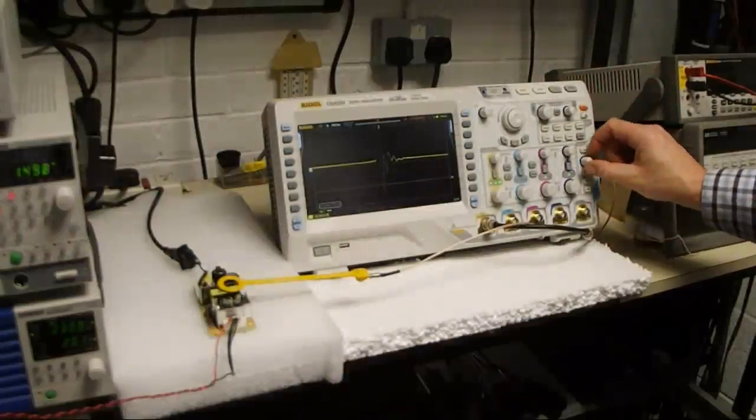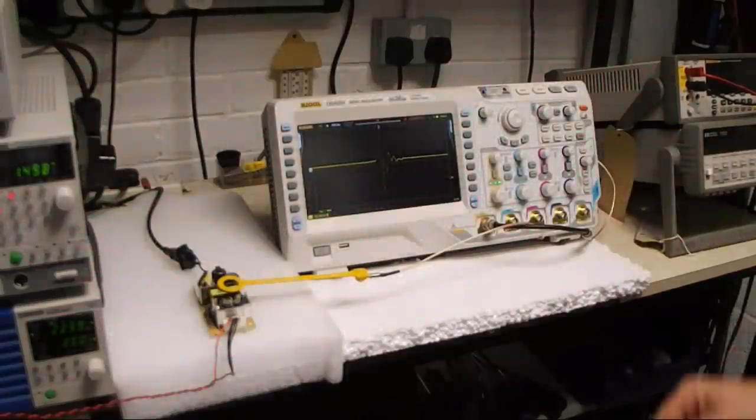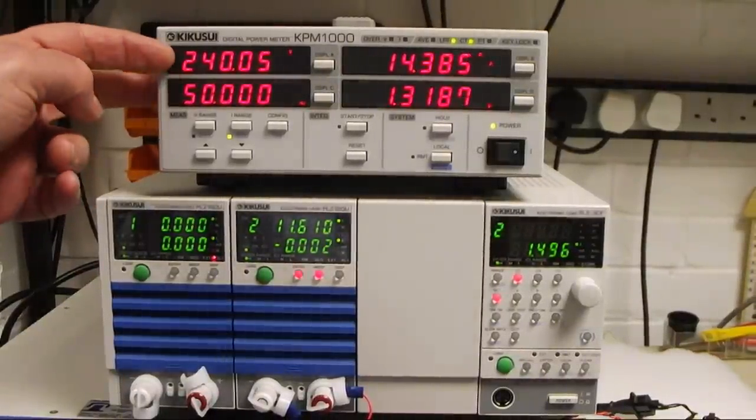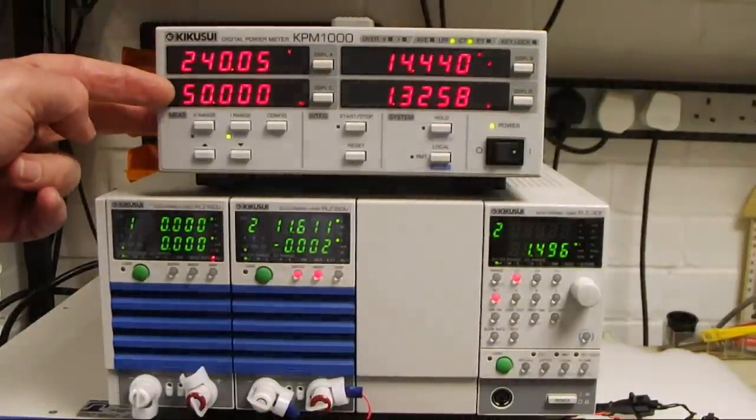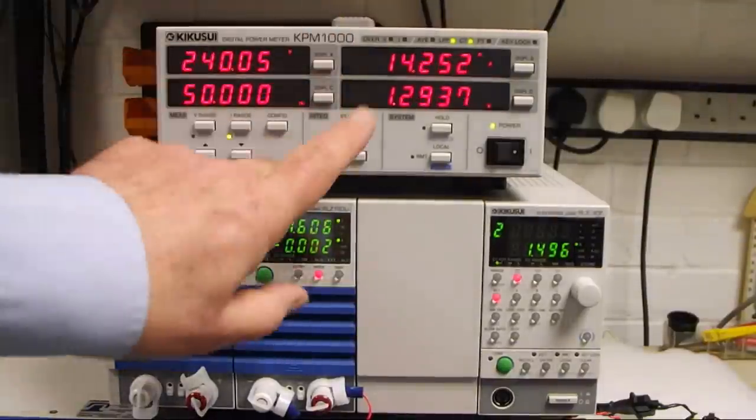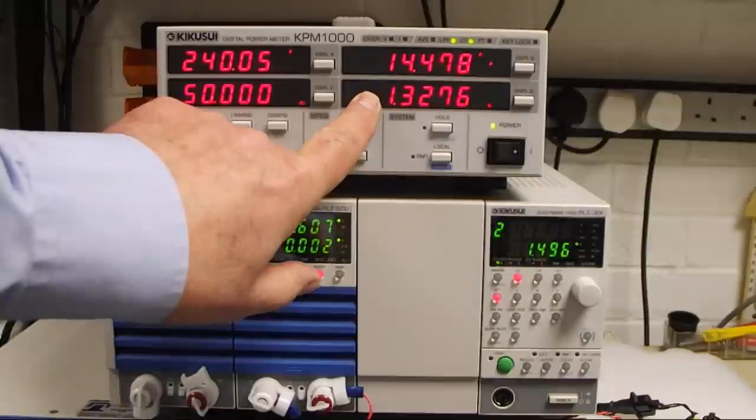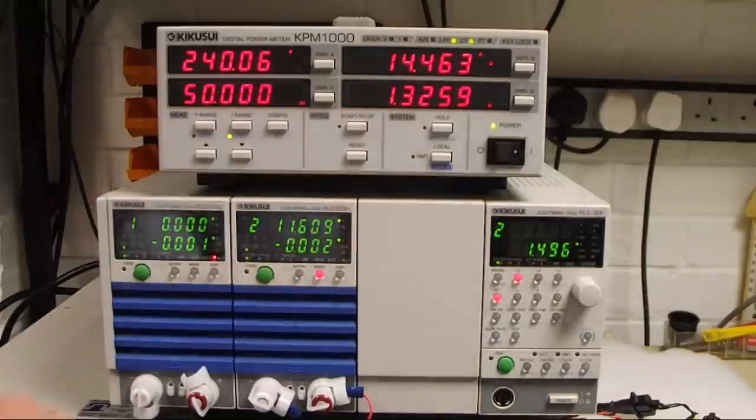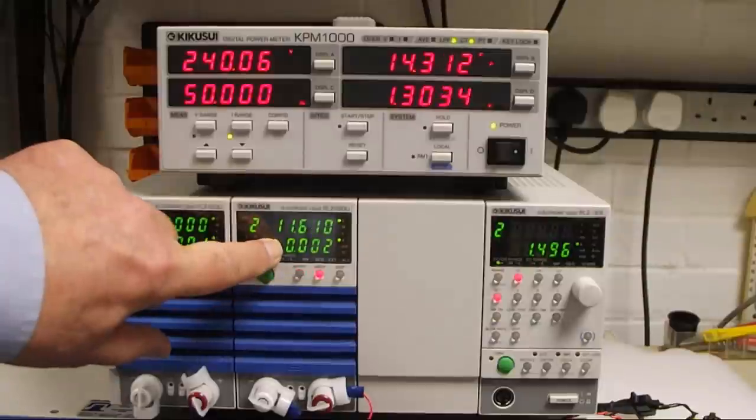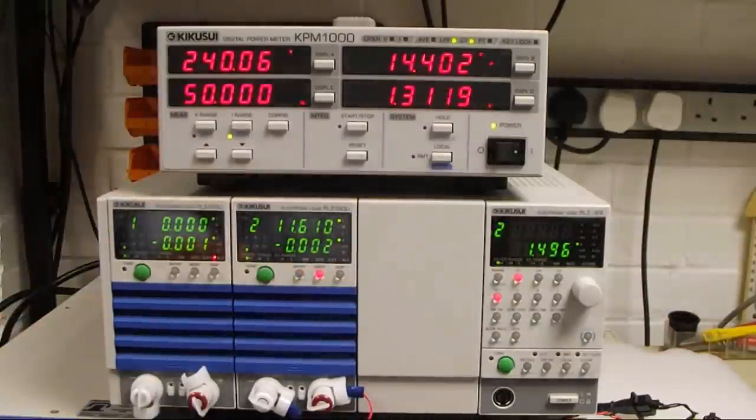And finally, we'll see how efficient our little switch mode power supply is. On the Kikasui power monitor, this is volts, frequency at mains, milliamps out, watts out, and on the Kikasui electronic load, these are the volts and the amps on the output side.